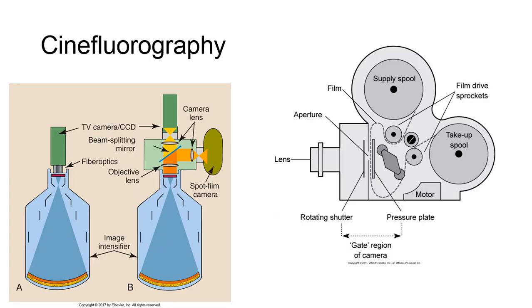Cinefluorography. Another method of recording the image on the output screen of the image intensifier uses a modified conventional movie camera, which is substituted for the film camera.